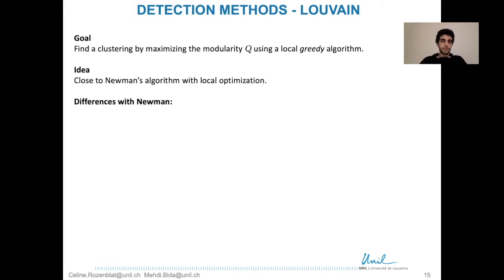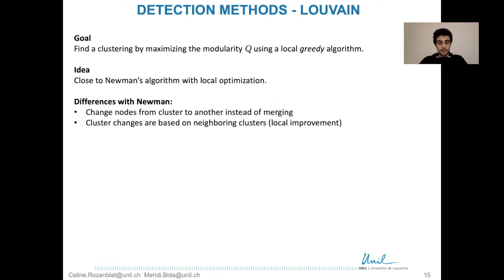The difference with Neumann is that here, instead of merging clusters, we actually change nodes from one cluster to another. The change of cluster for a node can only happen from the node's cluster to the cluster of a neighboring node. So the change can only be local.